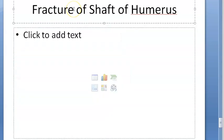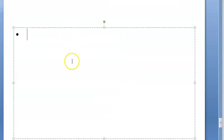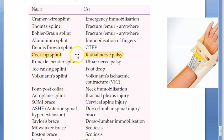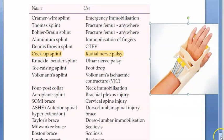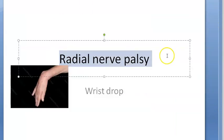There is also a splint used for radial nerve palsy — the cock-up splint is used for radial nerve palsy.